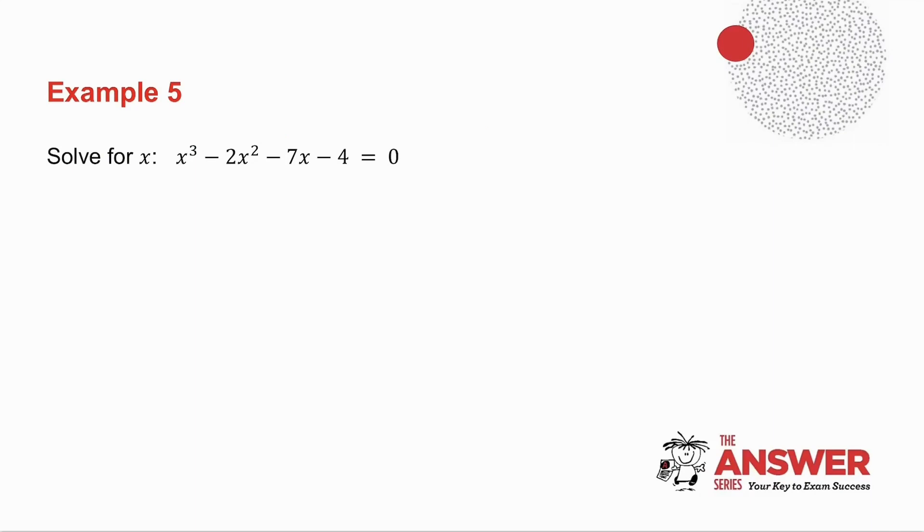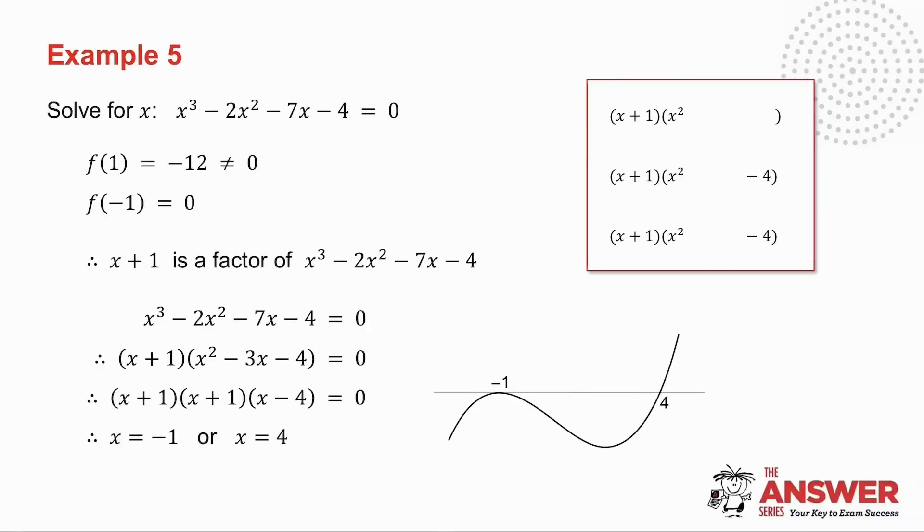Example number 5, I want you to pause the video and try this one yourself, and then we will do it together. I try f of 1, I don't get 0. I try f of minus 1, I do get 0, which means minus 1 is a root of the equation, which means x plus 1 is a factor.